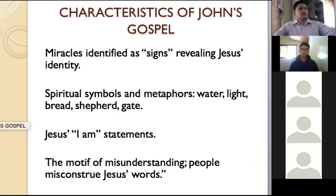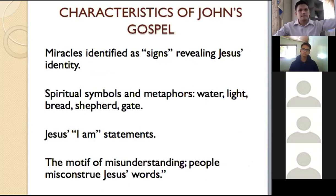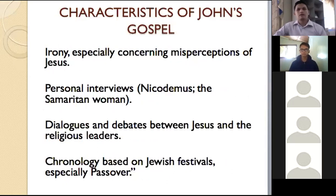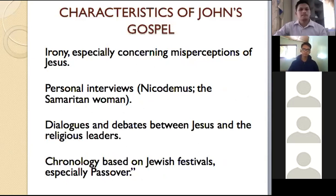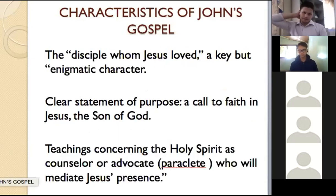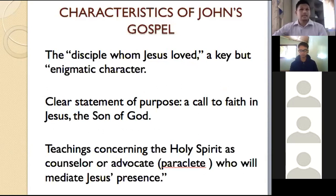Miracles are identified as signs — signs of Jesus Christ's divinity, signs that he is the Son of God. And there are spiritual symbols: metaphors like water and light. In the book of John, Jesus says 'I am the living water,' 'I am the bread,' and 'the way, the truth and the life.' Jesus' 'I am' statements appear throughout. You also have the motive of misunderstanding — people misconstrued Jesus' words — and you have irony, personal interviews with Nicodemus and the Samaritan woman, and events chronologically based on Jewish festivals, with dialogues and debates with religious leaders.